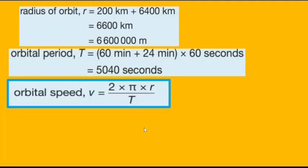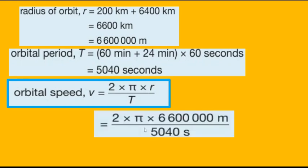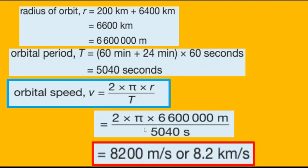We have just learned earlier that orbital speed equals 2πr over T. And so we can substitute the orbital radius and the time period in this formula as follows: 2 times π times the orbital radius which is 6.6 million meters divided by 5040 seconds. Working this out gives us 8200 meters per second, or 8.2 kilometers per second.